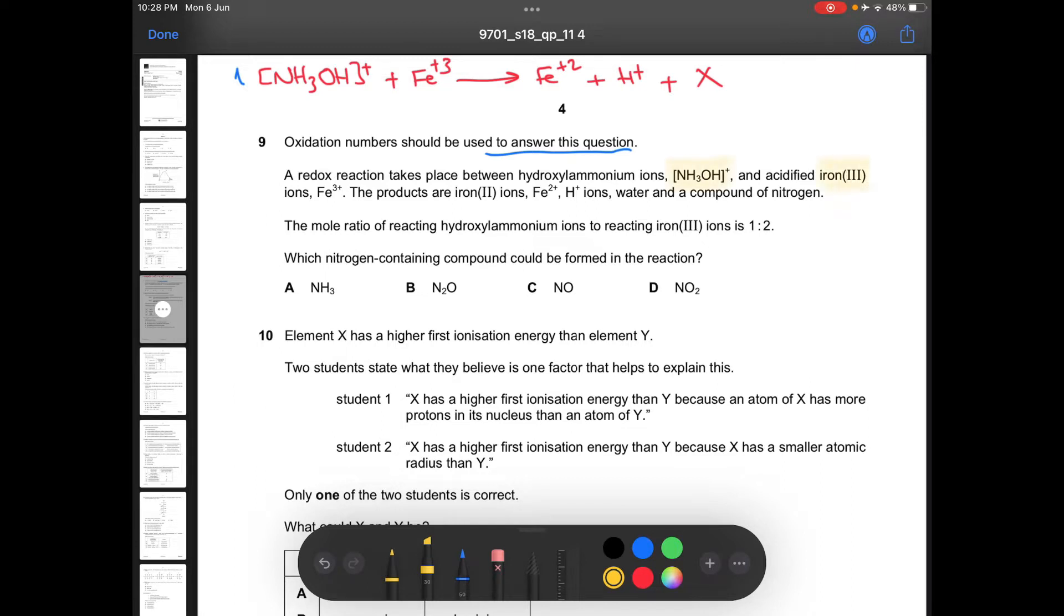and acidified iron-free ions. The products are iron 2+, hydrogen plus, and water, and a compound of nitrogen. Then we can translate all of this stuff in here to an equation, and it says that you have hydroxyl ammonium plus iron 3+ leads to give water, X, which is a compound of nitrogen, acid plus, and iron 2+.